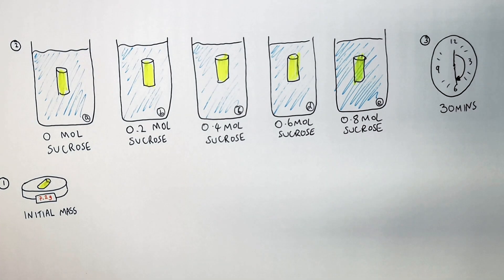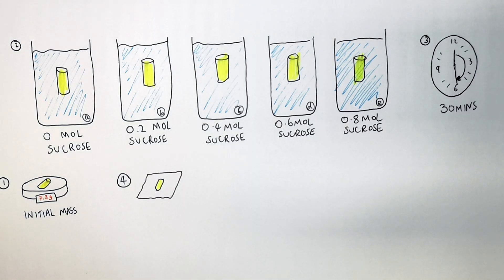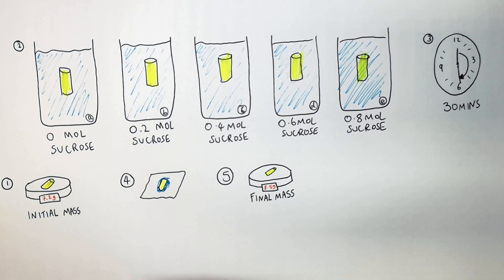After 30 minutes, you remove all of the potato cylinders. You must then dab them on tissue paper to remove any excess water. If you do not do this, this will affect your results. You then weigh the potato cylinders to calculate their final masses.